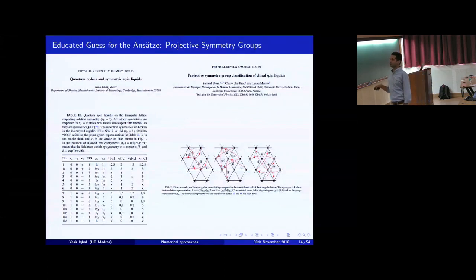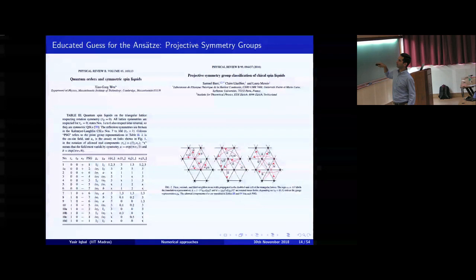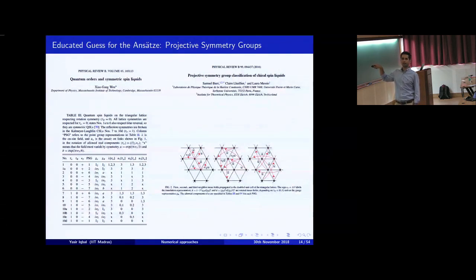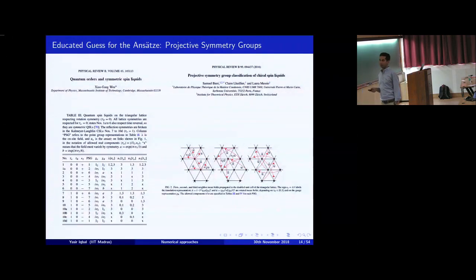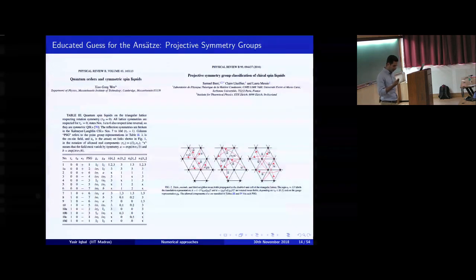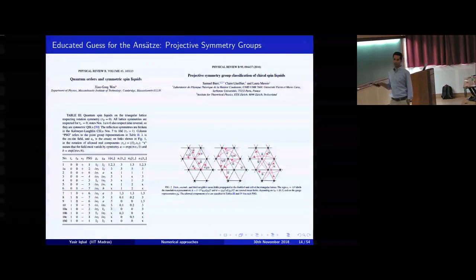For the triangular lattice, there are 20 spin liquids which you can construct with all lattice symmetries and time reversal. The ansat gives you the hopping sign structure: when you rotate it, its sign changes according to an algebraic relation. You get the full sign structure of each ansat for nearest-neighbor, second-nearest-neighbor, and third-nearest-neighbor bonds. On the Kagome lattice also, there are 20 spin liquids at most. You can also classify chiral spin liquids by relaxing the constraint of time reversal and parity, leading to a much larger number than 20. Samuel Bieri, Claire Lhuillier, and Laura Messio worked out this PSG classification for chiral states.